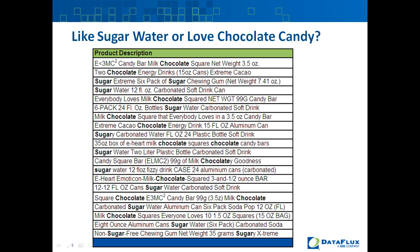Categorization is looking at the product descriptions and trying to find a way to divide them up. Sometimes the category may be a keyword that exists within the product description, but a lot of times it will have to be extrapolated based on a semantic understanding of what these free-form descriptions mean. In this particular case, we have only two categories: a candy category and a beverage category.